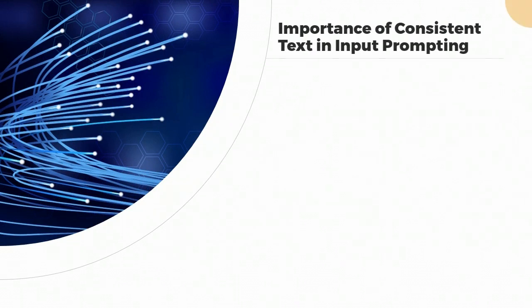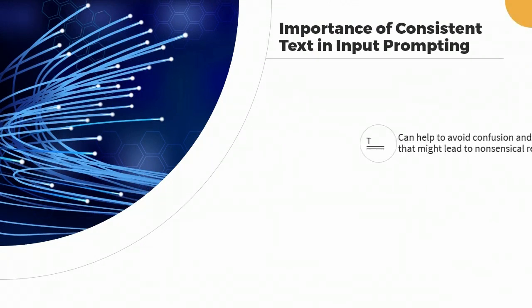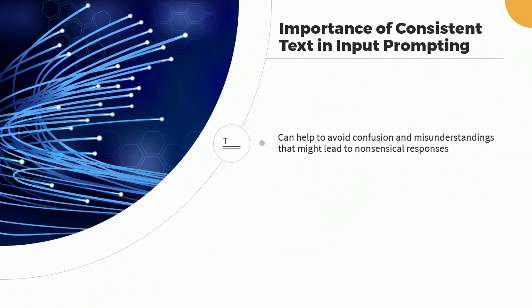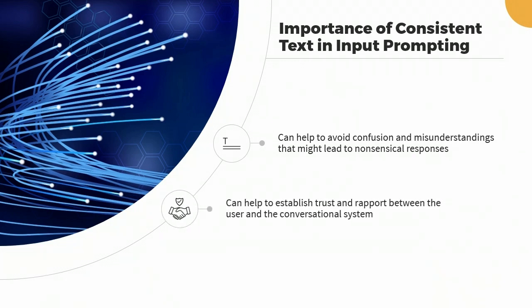When the text in the input prompt is consistent with the language and terminology used throughout the conversation, it can help to avoid confusion and misunderstandings that might lead to nonsensical responses. Additionally, a consistent tone and style of language can help to establish trust and rapport between the user and the conversational system.